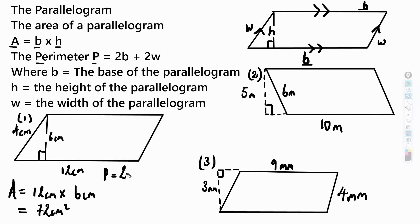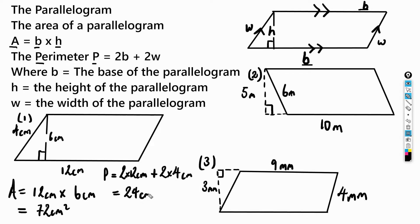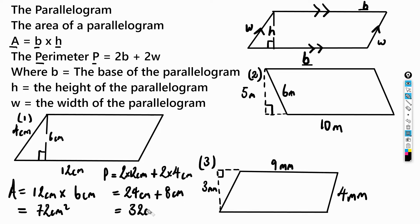For the perimeter of number one: 2 times the base (2 × 12 cm) plus 2 times the width (2 × 4 cm) gives us 24 centimeters plus 8 centimeters, which equals 32 centimeters for the perimeter.